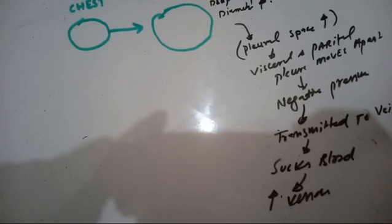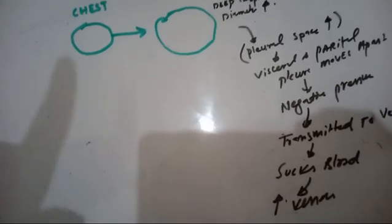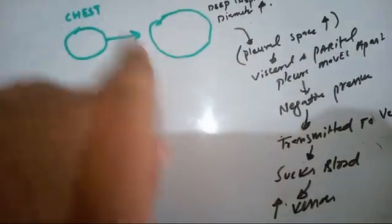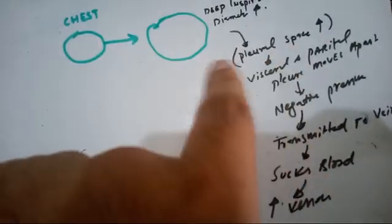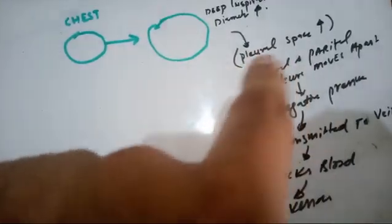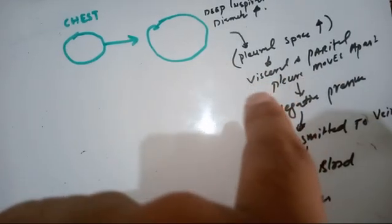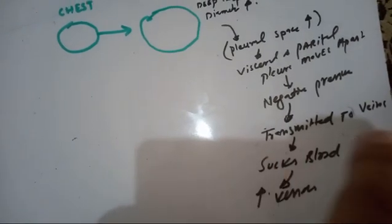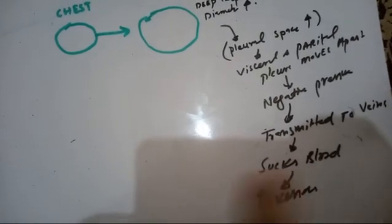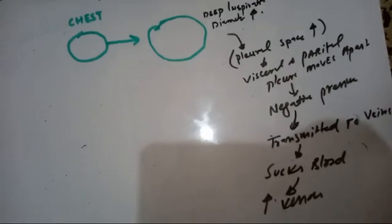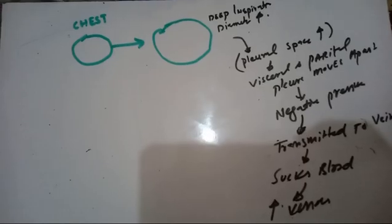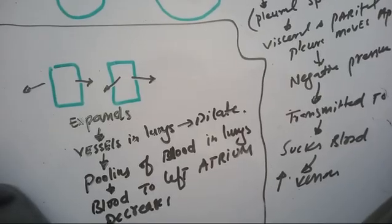On cross-section during deep inspiration, the diameter is increased. If the diameter is increased, the space between the parietal pleura and the visceral pleura increases. If that increases, the negative pressure inside the pleural cavity increases. That pressure is transmitted to the veins in the neck and sucks the blood, so venous return increases. During deep inspiration, venous return increases.